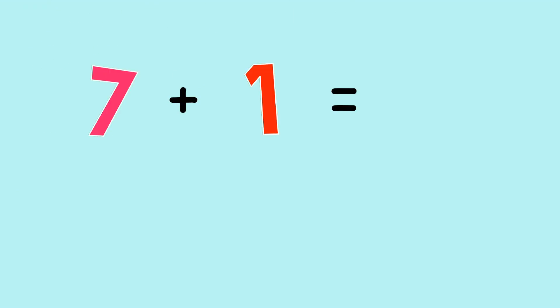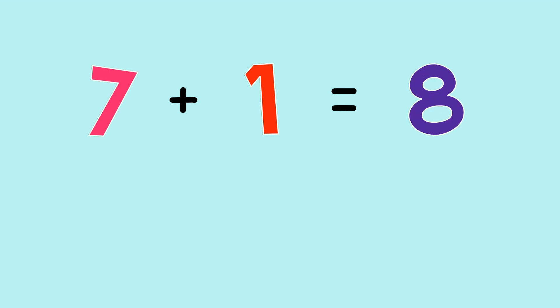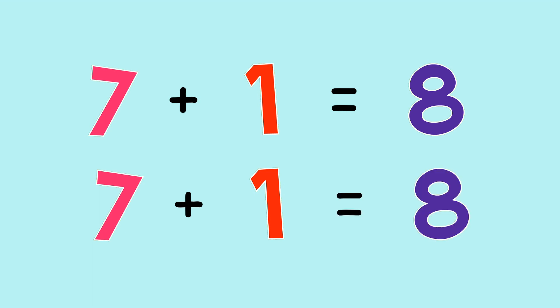What does seven plus one equal? You're correct, eight. Seven plus one equals eight.